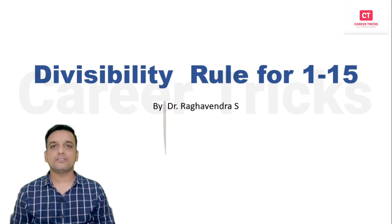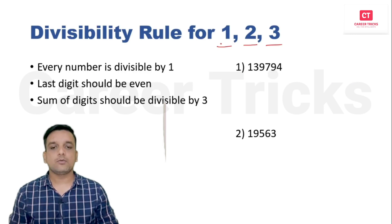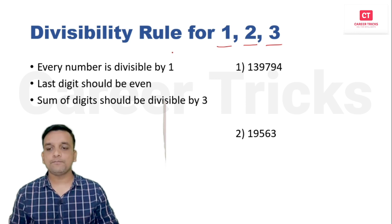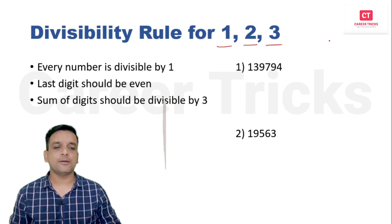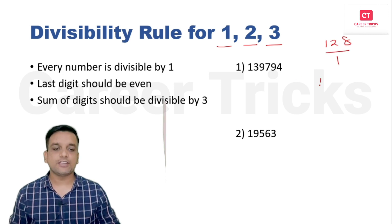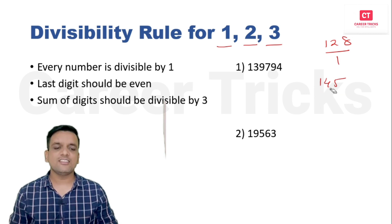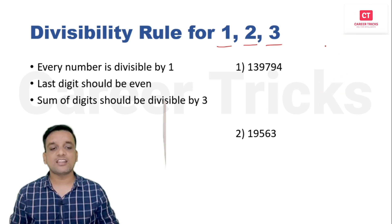Now we will solve the first problem. What is the divisibility rule for 1? Every number is divisible by 1. If you take any number — 128, 145 — all will be divisible by 1. If you take any number, it will be divisible by 1.